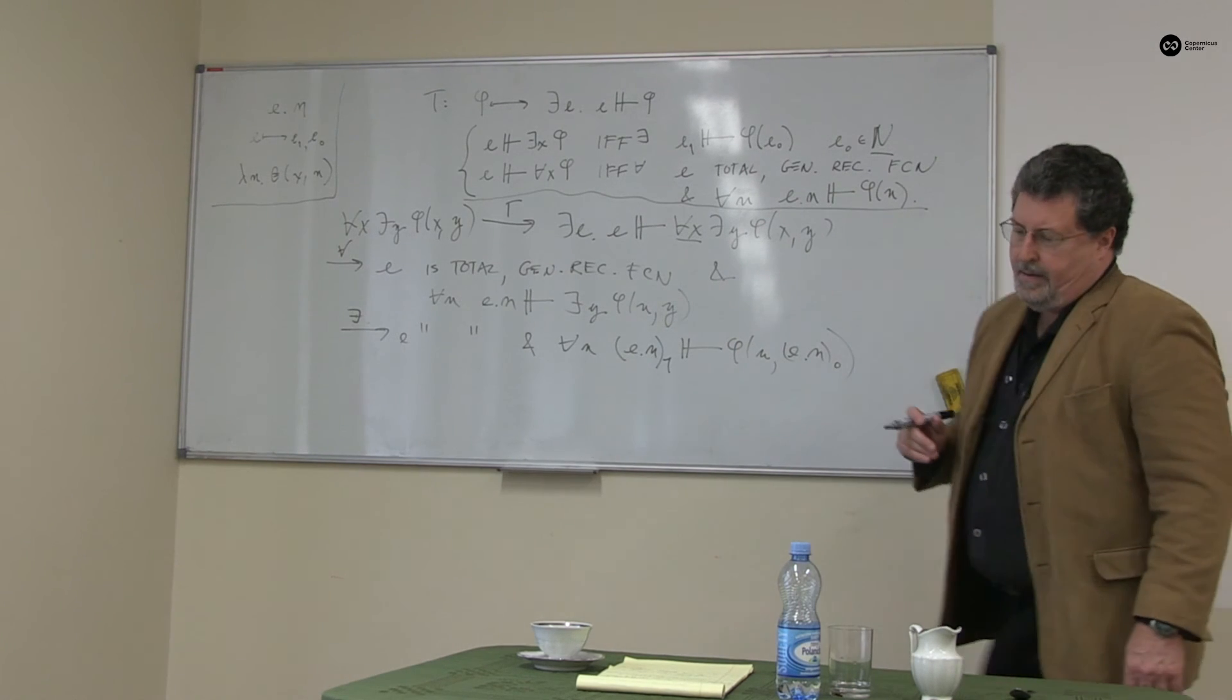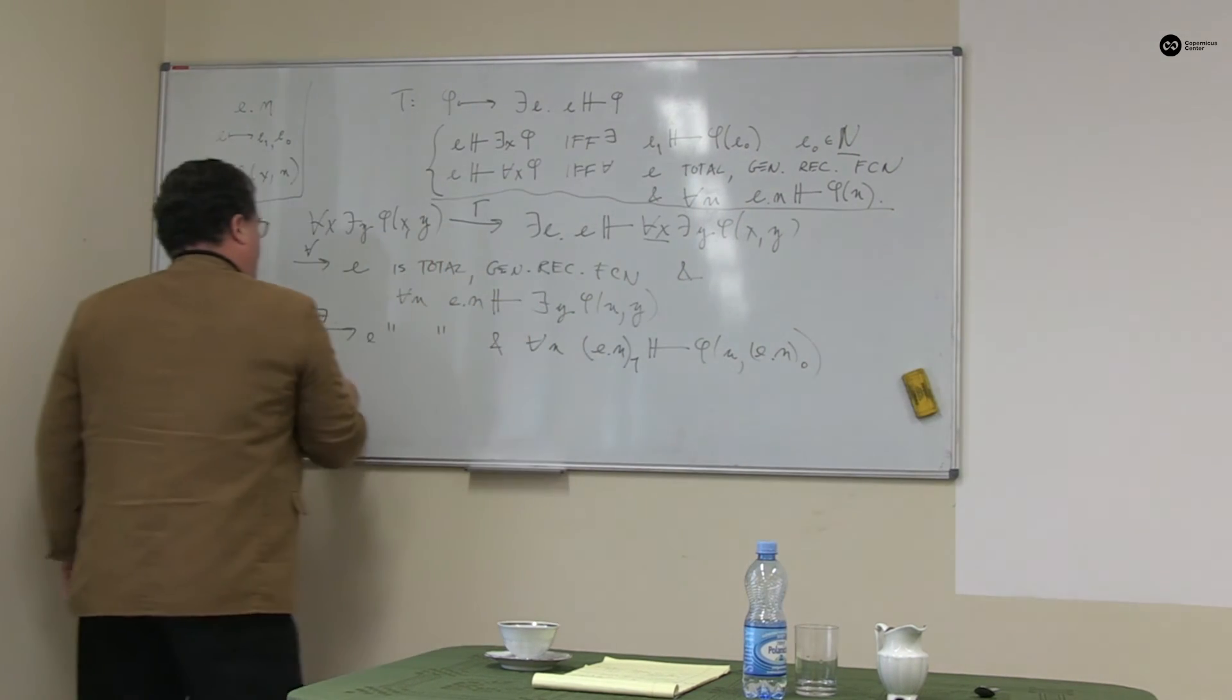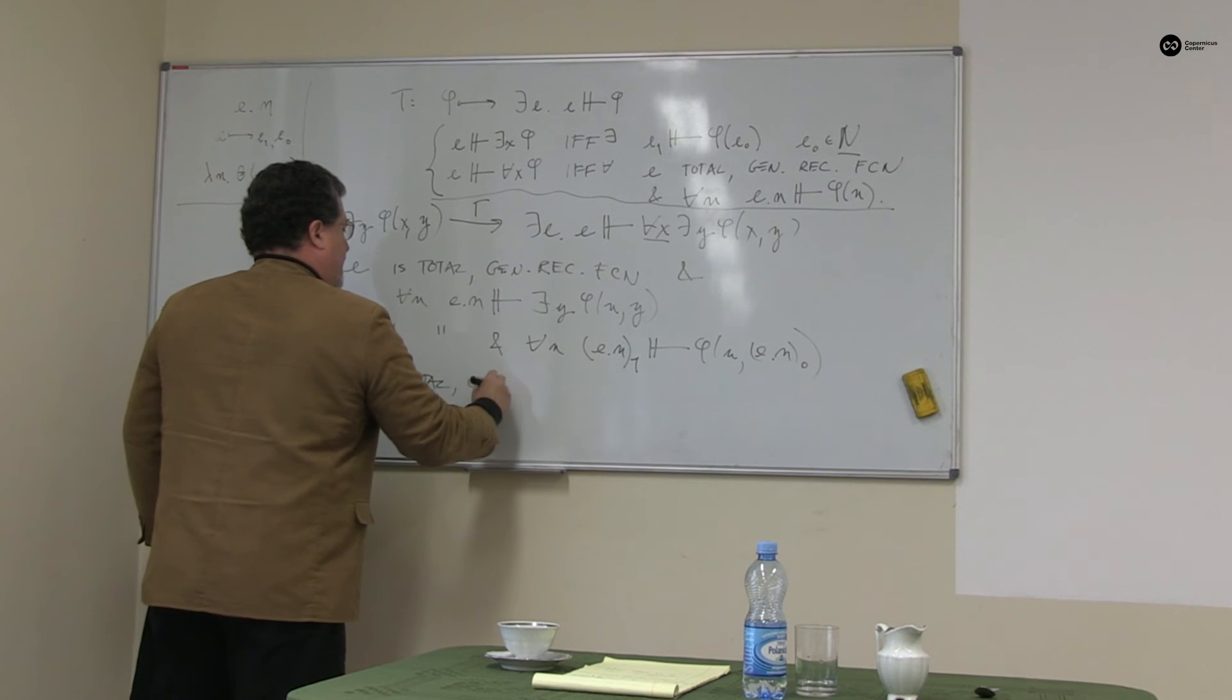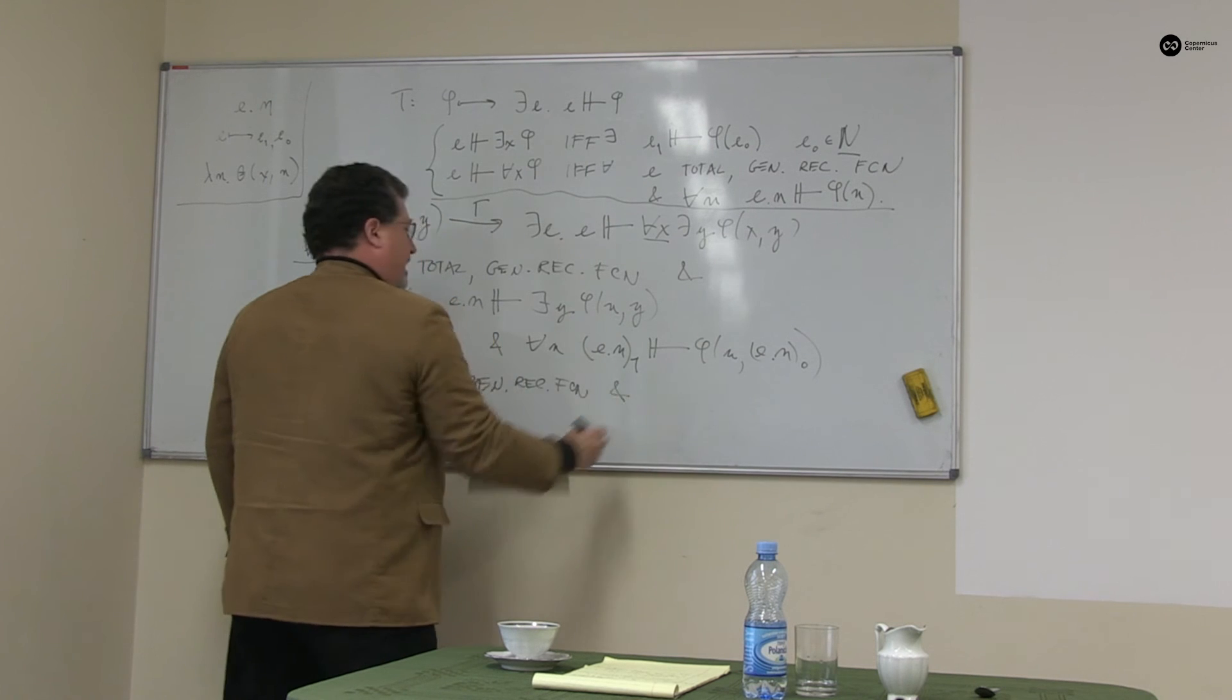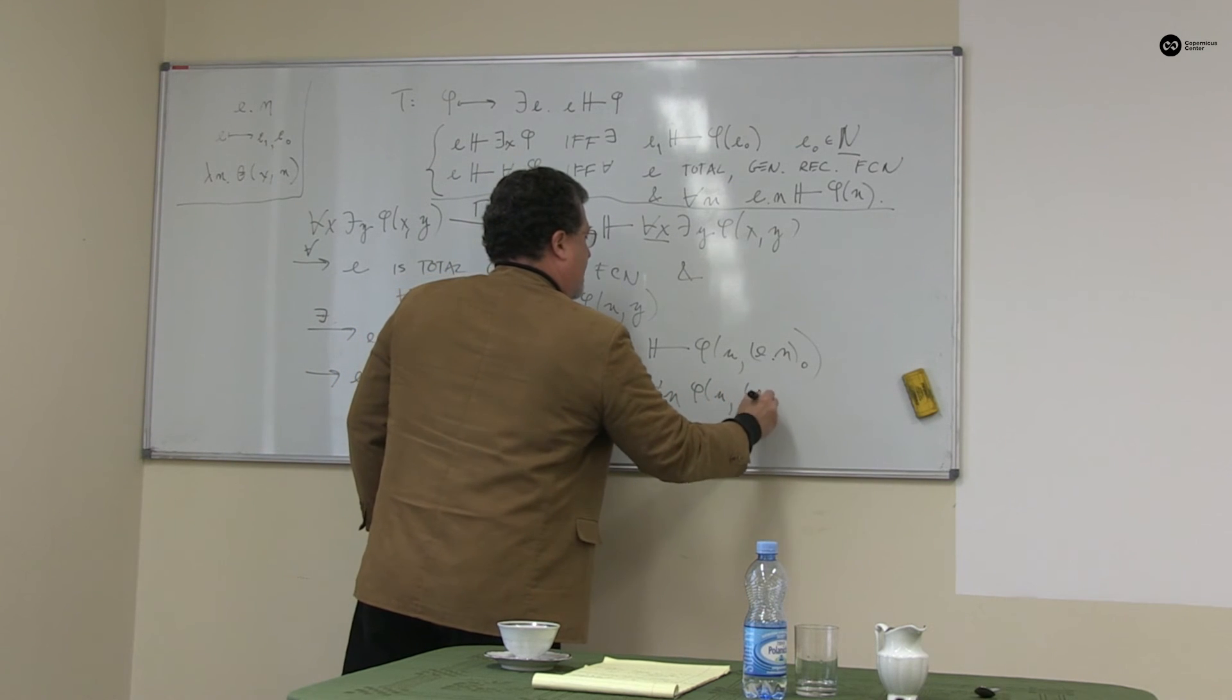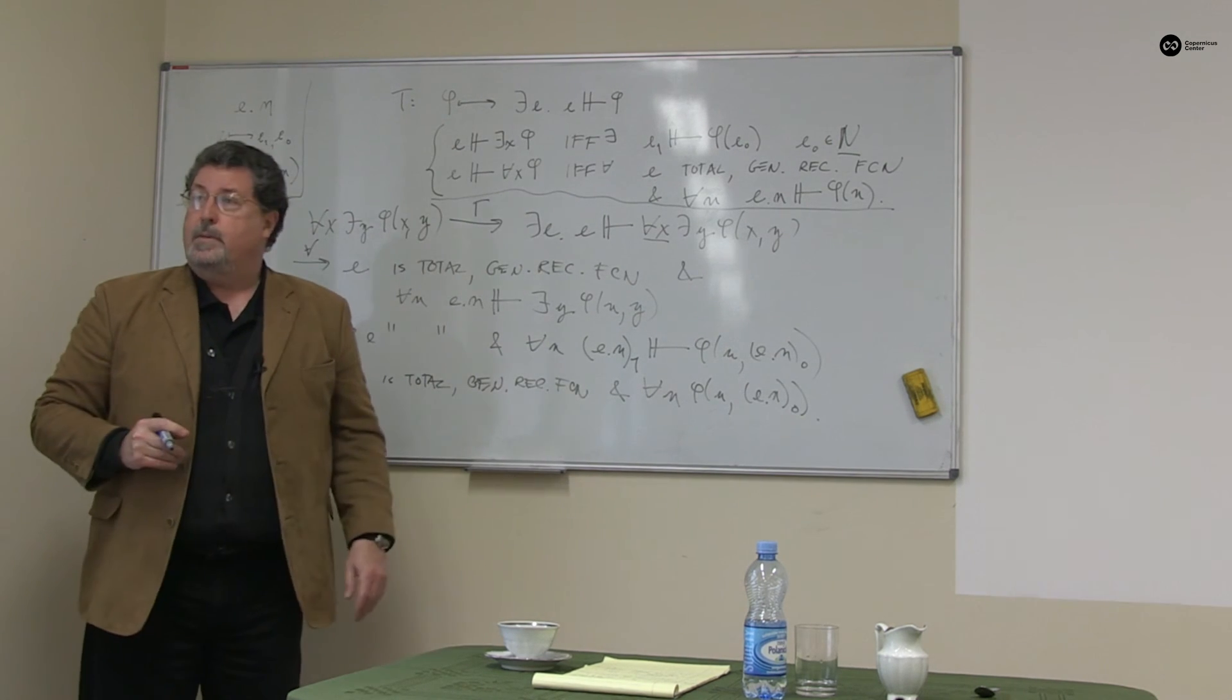And now I'm going to apply the t-scheme in reverse, going this way. I now know that e is total, general recursive. And for all n, my t-scheme tells me I can drop this off, phi n e applied to n0, because this was a formulation that was assumed in parameters.